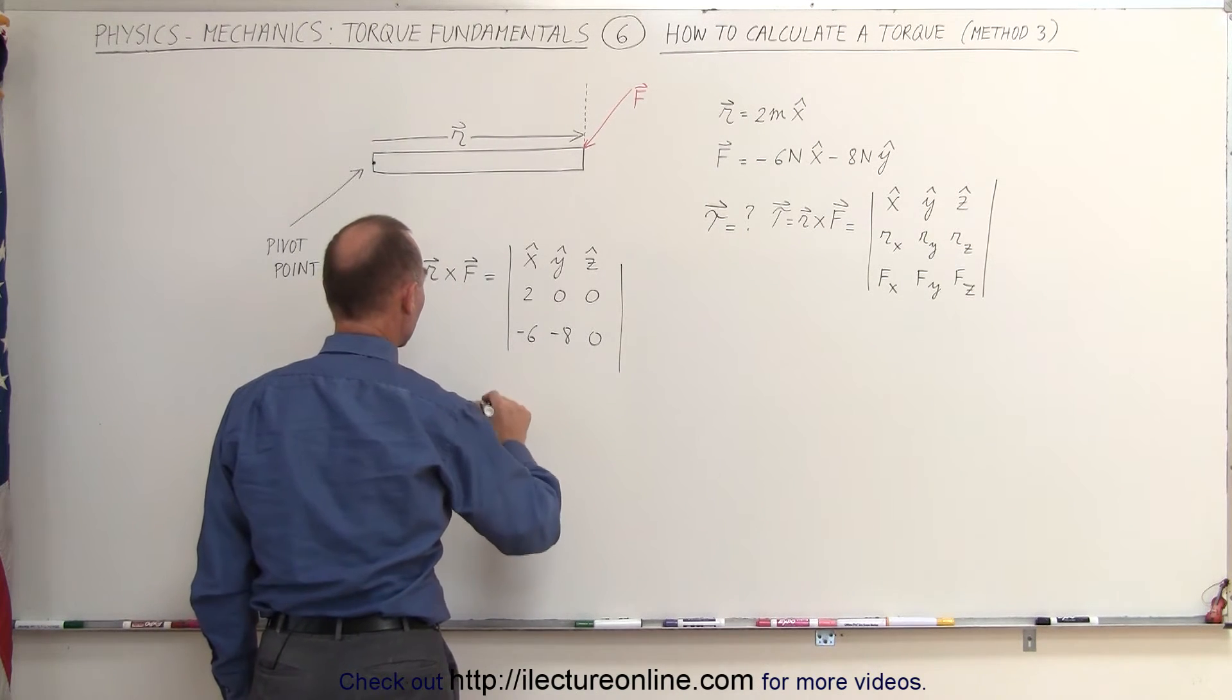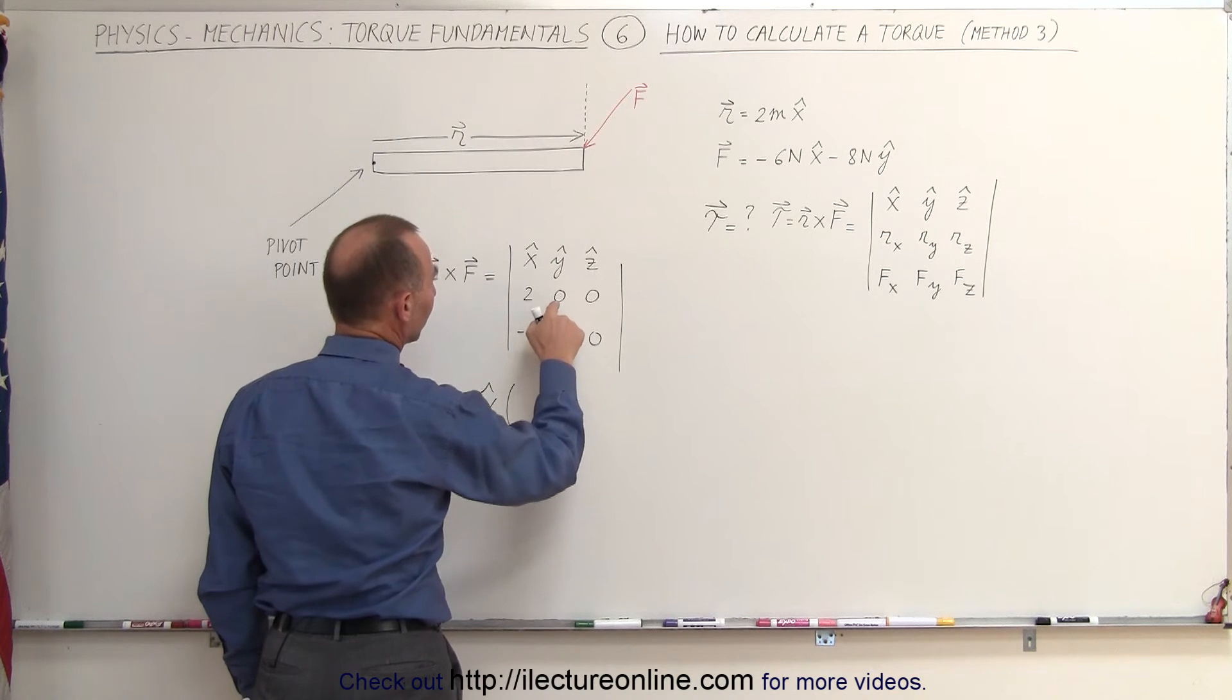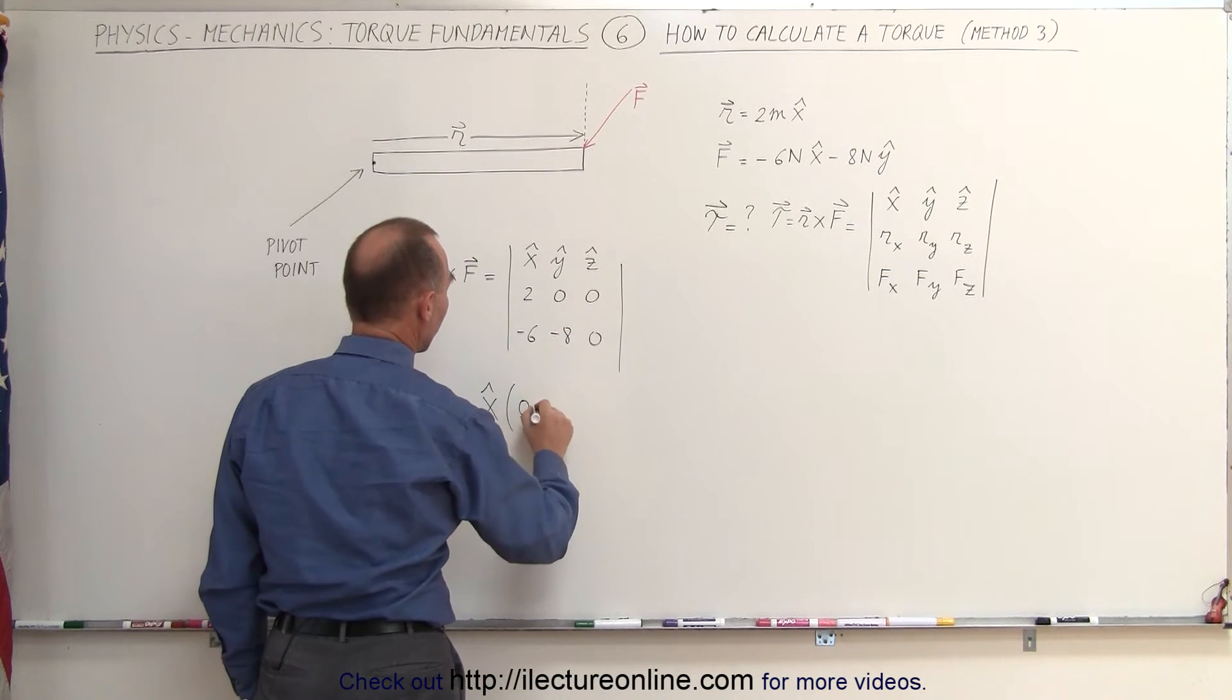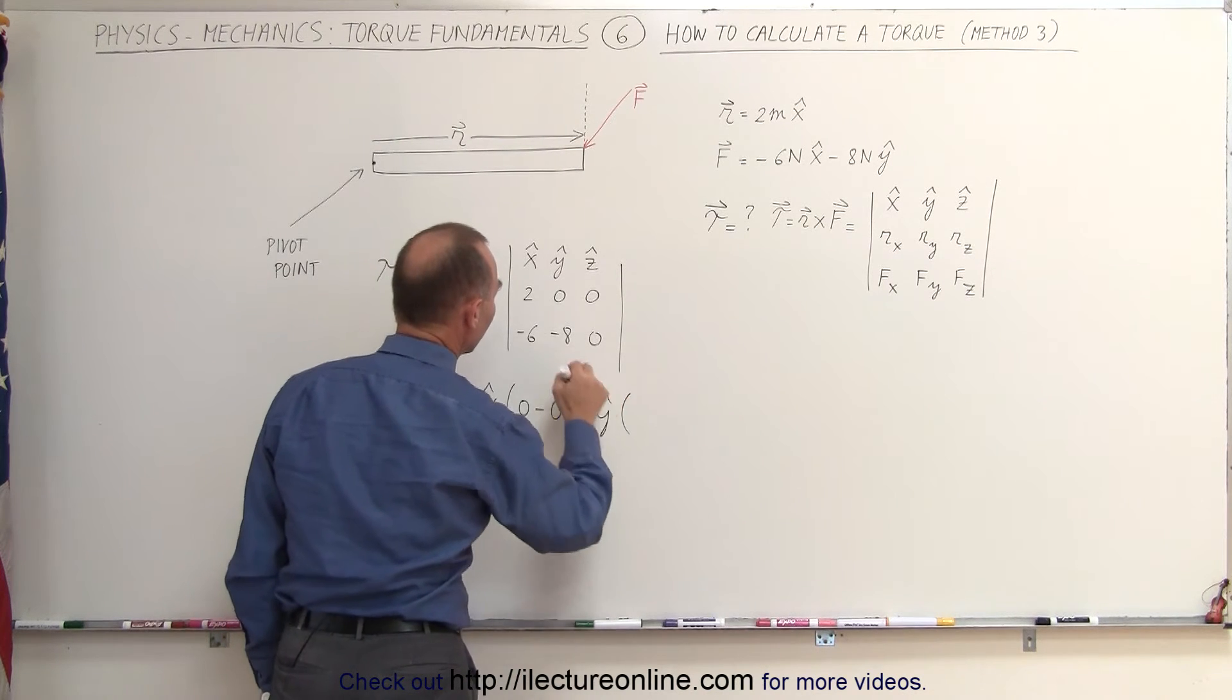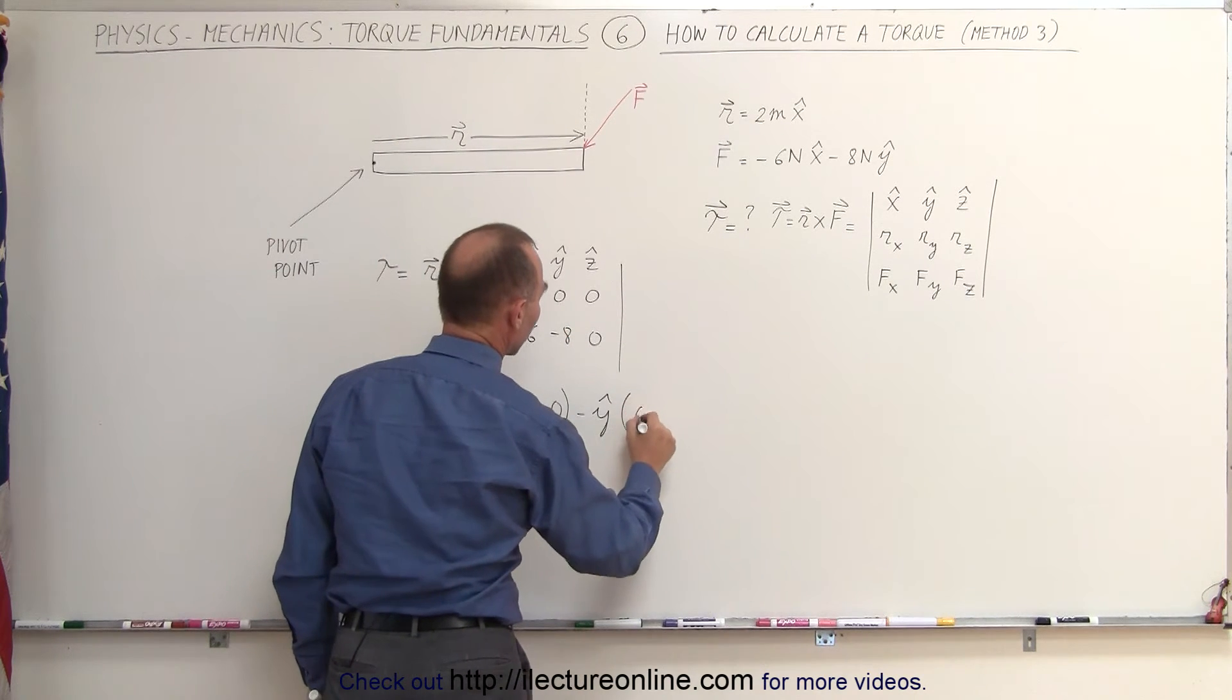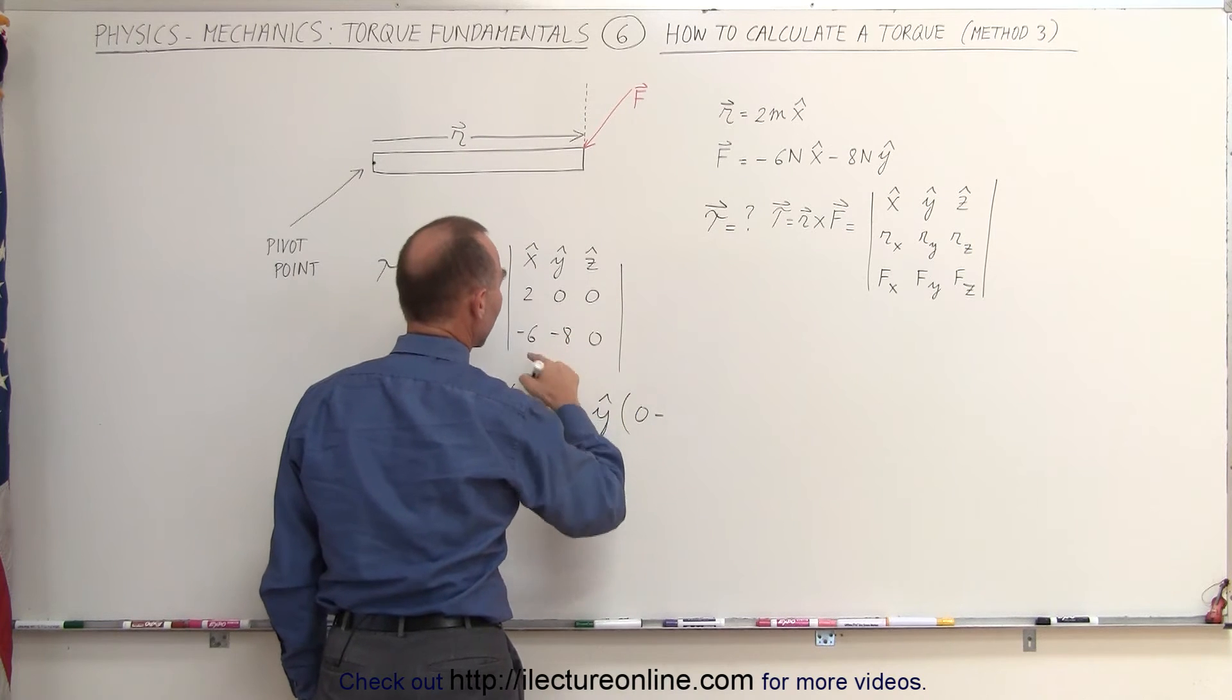This is equal to the x unit vector times 0 times 0, minus 0 times 8, minus the y unit vector times 2 times 0, minus 0 times the negative 6.